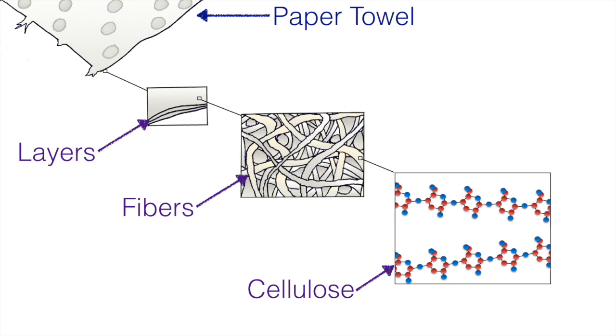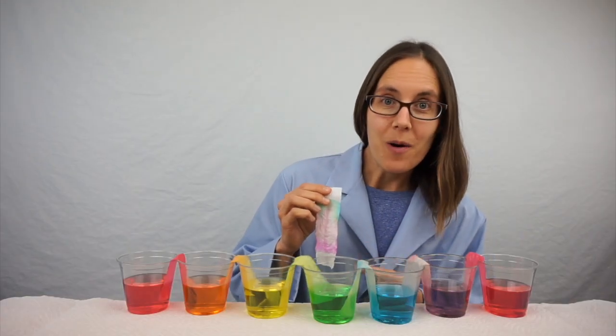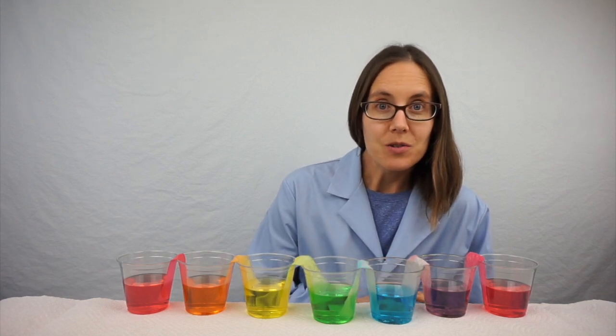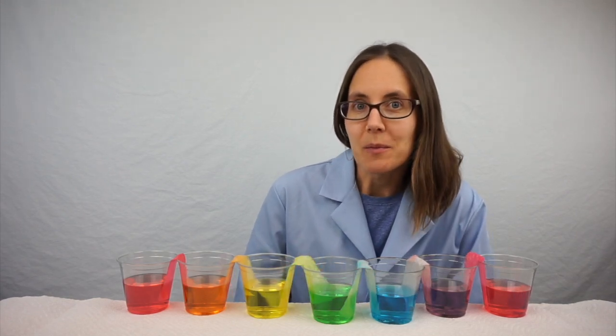And paper towels are full of small spaces, both in between the layers and fibers of the towel and in between the cellulose molecules that make up the paper towel. That is why they're so absorbent. So that explains how water went up the paper towel in chromatography and how water traveled from cup to cup in the walking water experiment.